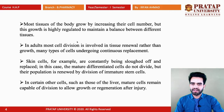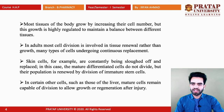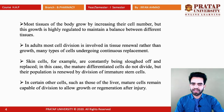For example, skin cells are constantly peeled off and replaced by new cells. Mature differentiated cells do not divide; they are removed and new cells grow because their population is renewed by the division of immature stem cells. In certain other cells, for example the liver, mature cells remain capable of division to allow growth or regeneration after any injury.